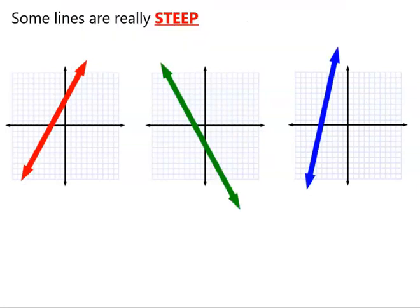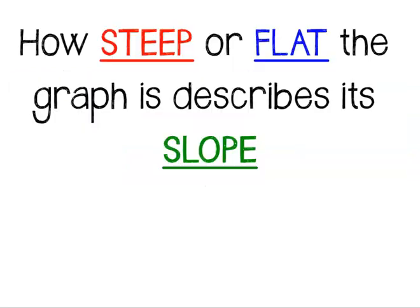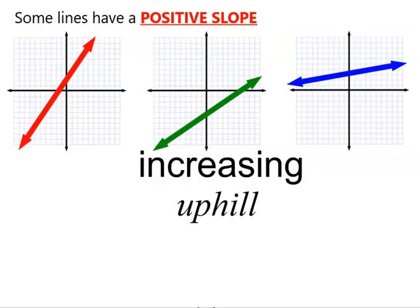Sometimes the lines are really steep, and sometimes the lines are a bit more shallow or flatter. Now eventually you'll learn specifically how tilted those lines are, and you'll be able to identify a number that tells if a line is more steep or if a line is more flat, and that describes the slope. But today we'll just work on the basics.